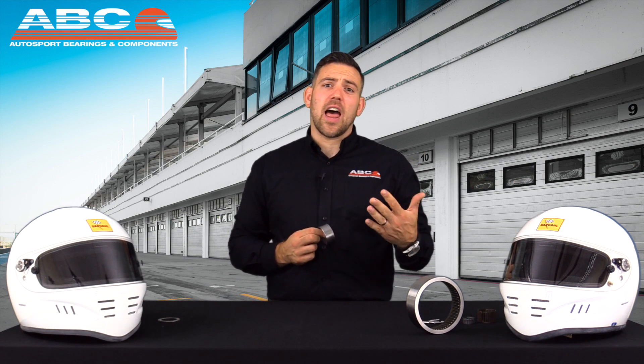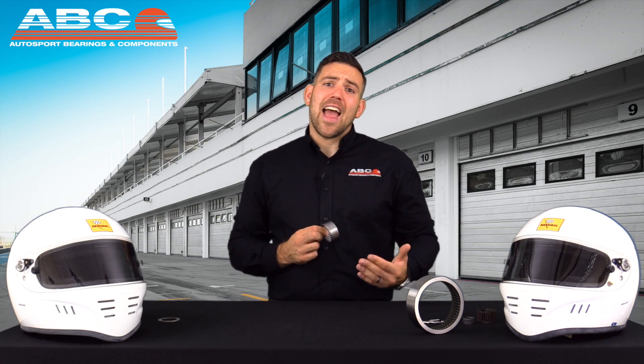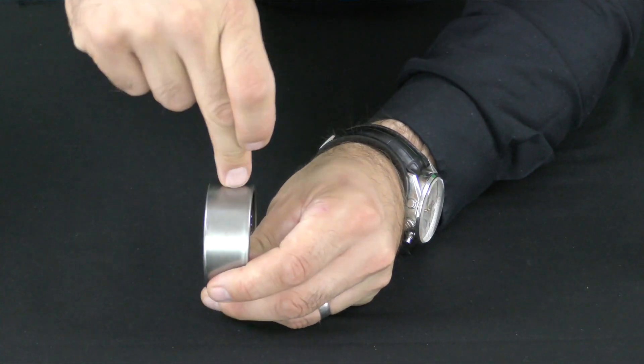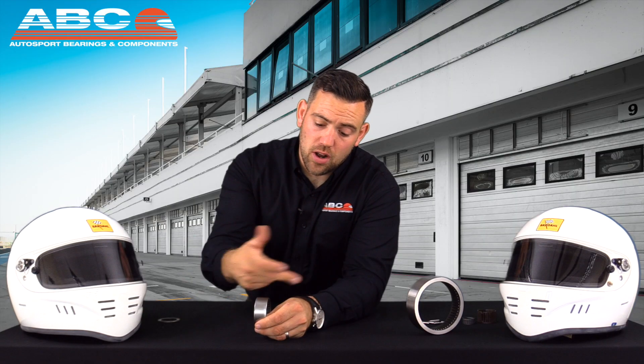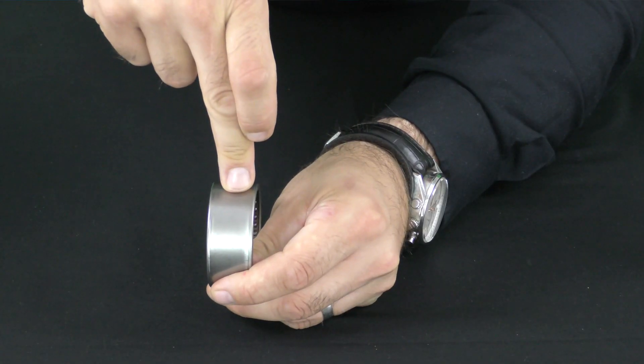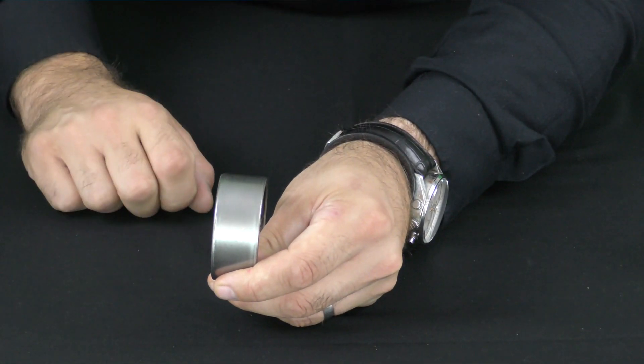Some of the positives of needle roller bearings are that they allow for high speed compensation. Given their size they have relatively high load carrying capacity and they have relatively low mass. Some of the negatives however is that they only compensate for support in one direction, so this option I'm showing you here could support a radial load but has no axial compensation.